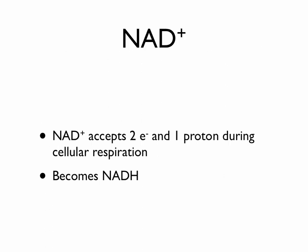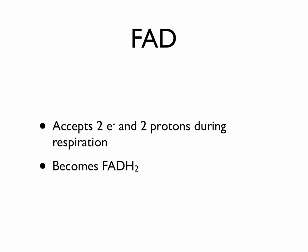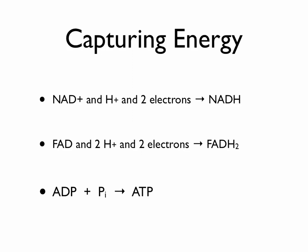NAD+ is a molecule that will accept two high-energy electrons and one proton during cellular respiration — it becomes NADH when that happens. FAD will accept two electrons and two protons during respiration to become FADH2. So now our molecules for capturing energy look like this: NAD+ and H+ and two electrons create NADH. FAD and two hydrogen ions and two electrons create FADH2. And just as we saw in photosynthesis, ADP and Pi combine to create ATP.